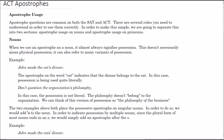Let's start with the nouns. When we use an apostrophe on a noun it almost always signifies possession, and the key here is that it does not necessarily mean physical possession. Let's take a look at two examples to illustrate the difference between physical possession and non-literal possession. The first is a physical possession: John made the cat's dinner. Here the dinner quite literally belongs to the cat, and the apostrophe signifies that the cat owns the next noun.